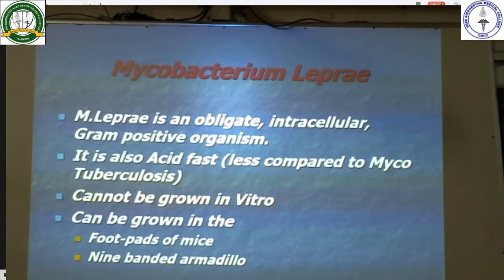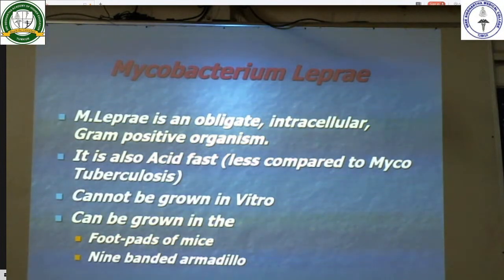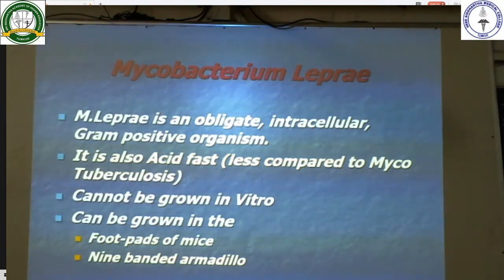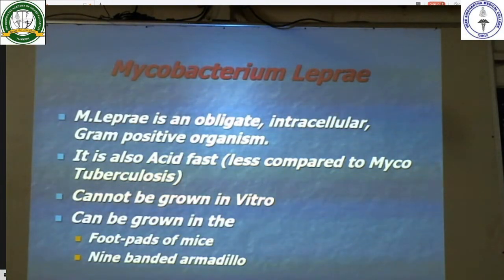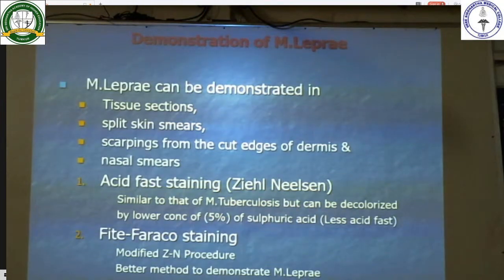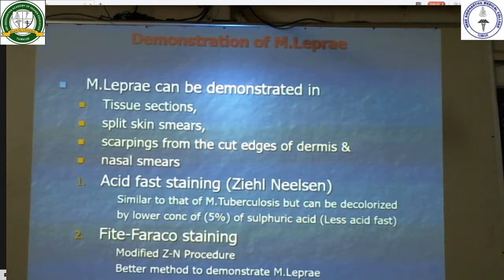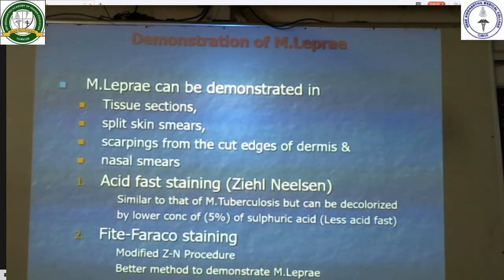It is caused by Mycobacterium leprae, which is an obligate intracellular gram-positive organism and is also acid-fast, though less acid-fast compared to Mycobacterium tuberculosis. It cannot be grown in vitro but can be grown in the footpads of mice and in the nine-banded armadillo. Mycobacterium leprae can be demonstrated in tissue sections, split skin smears, scrapings from the edges of lesions, and nasal smears. It can be stained using acid-fast staining but can be decolorized by lower concentration — 5% sulfuric acid.